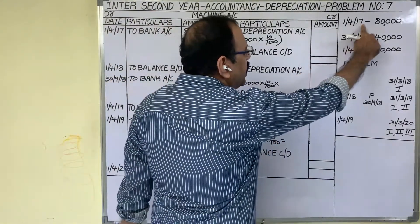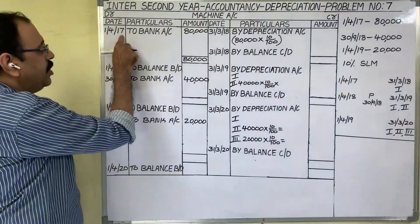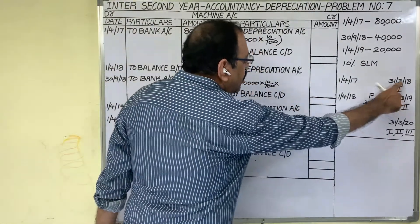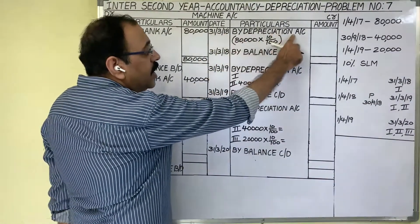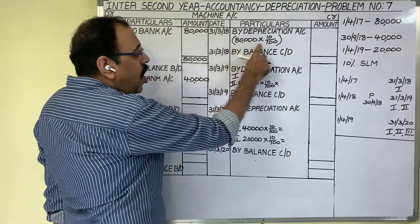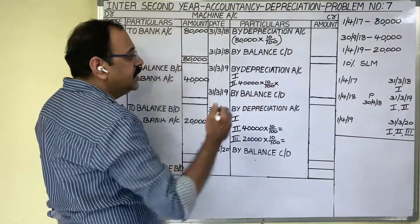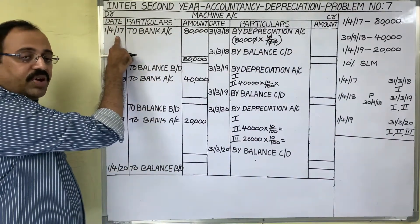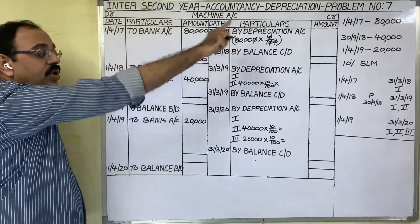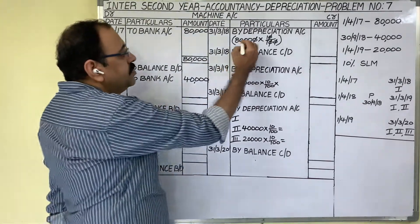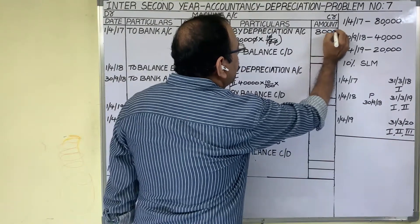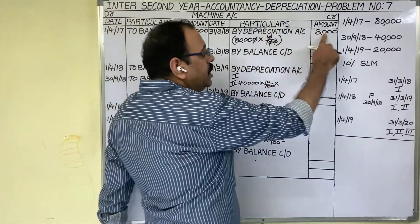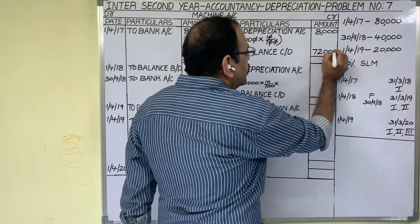When they purchased the 1st asset for 80,000, we write that on the debit side with the purchase date — bank 80,000 rupees. Now, on the 1st year last date, 31st March 2018, we calculate the depreciation. Original cost of the asset is 80,000; at 10% depreciation under the Straight Line Method, and since they purchased on the starting date of the year, months are not required. The depreciation on the 1st asset is 8,000 rupees. The balance carried down to the 2nd year is 72,000, making the debit total 80,000.